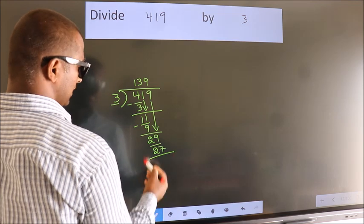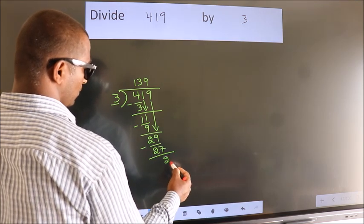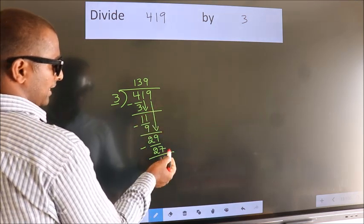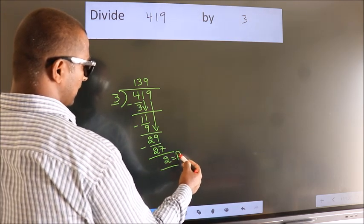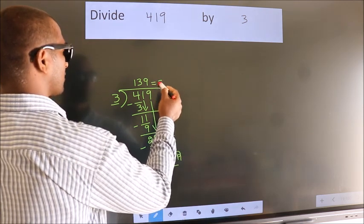Now, we subtract. We get 2. No more numbers to bring down. So, we stop here. This is our remainder. This is our quotient.